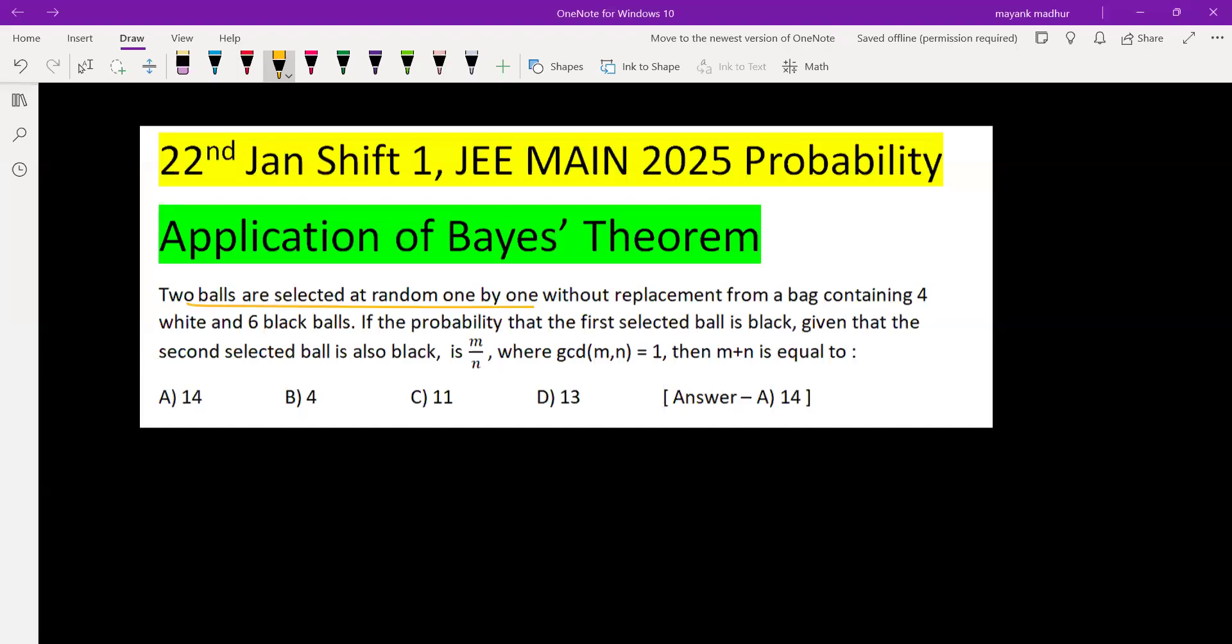Two balls are selected at random one by one without replacement from a bag containing four white and six black balls. So we have four white and six black balls in a bag and we are selecting two balls.